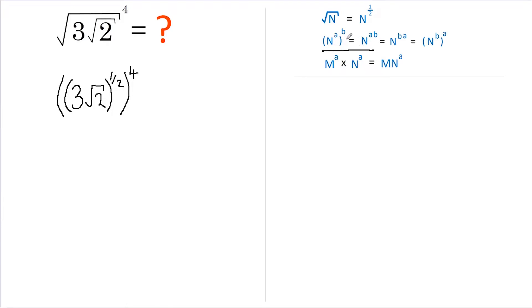then that is the same as that number raised to the two powers multiplied together. That means we can rewrite this as 3 root 2 all to the power of a half times 4.